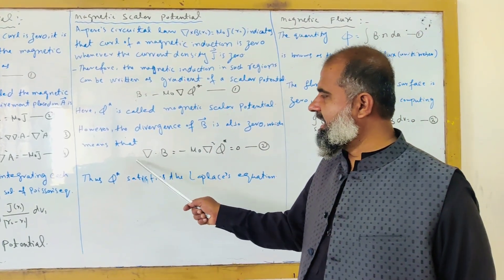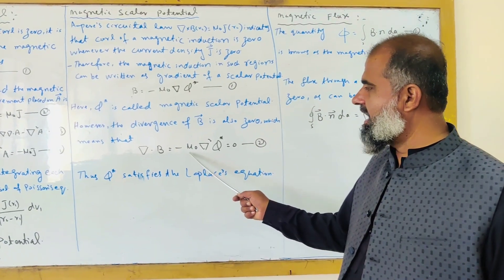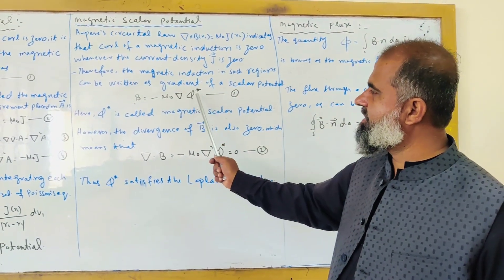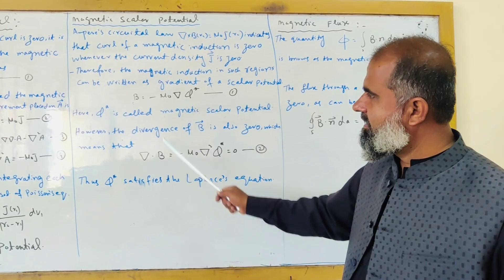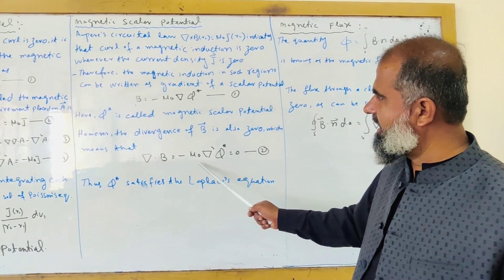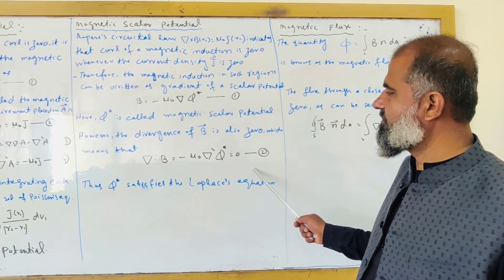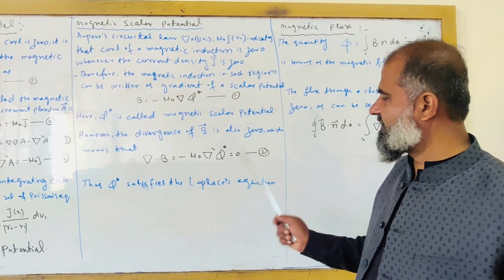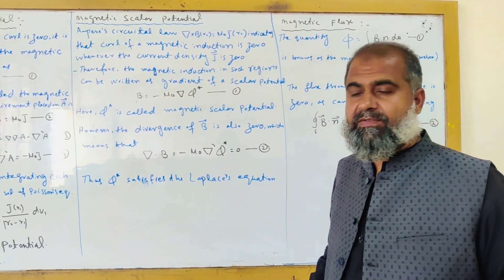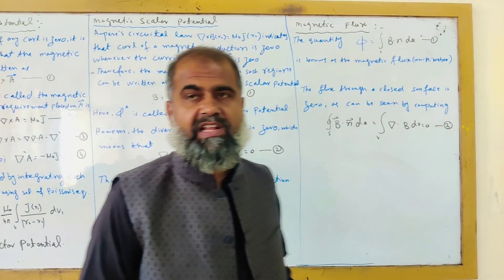Which means del dot B equals minus mu naught. If you take the divergence of equation 1, del dot B equals minus mu naught del square phi star, which equals zero. This satisfies the Laplace equation that we studied in earlier chapters.